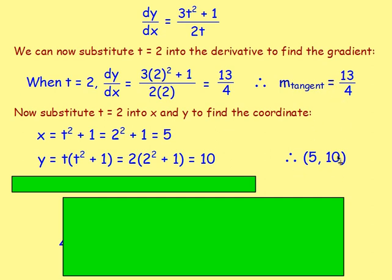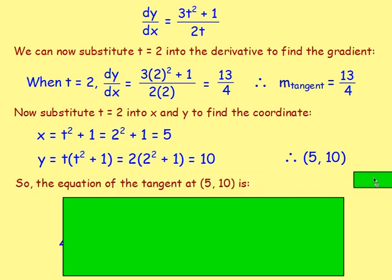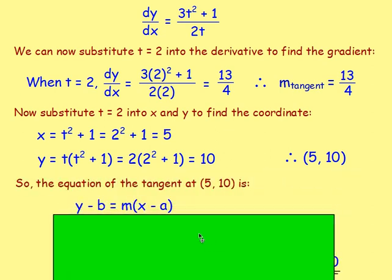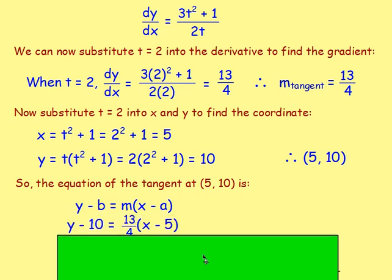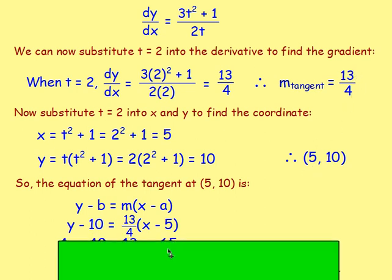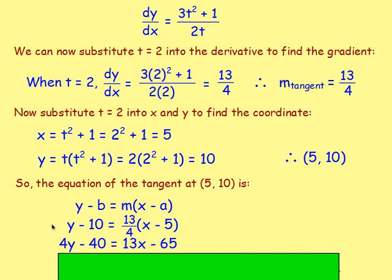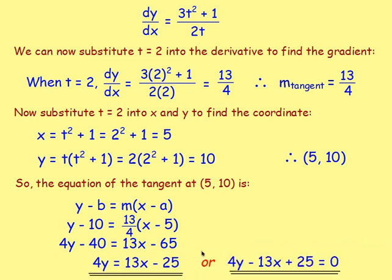We've got the gradient and the point, so substitute into y minus b equals m bracket x minus a. That gives y minus 10 equals 13 over 4 bracket x minus 5. Multiply both sides by 4: 4y minus 40 equals 13x minus 65. Rearranging: 4y equals 13x minus 25, or equivalently 4y minus 13x plus 25 equals 0. That is the equation of the tangent.